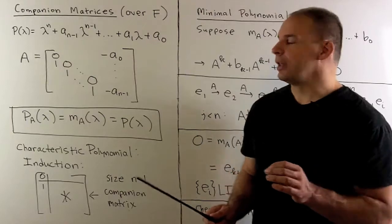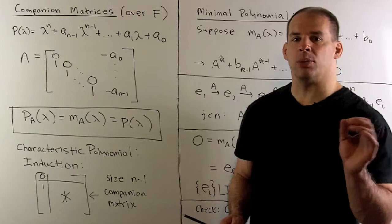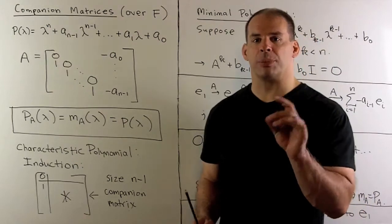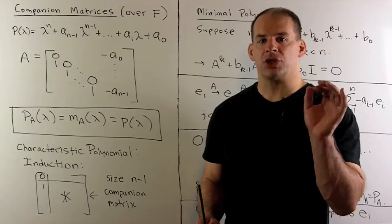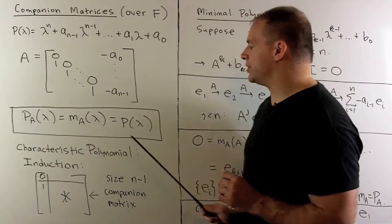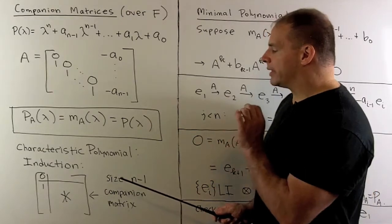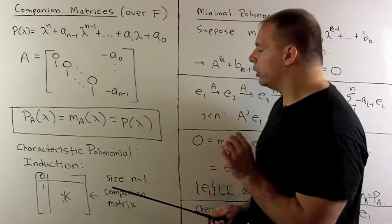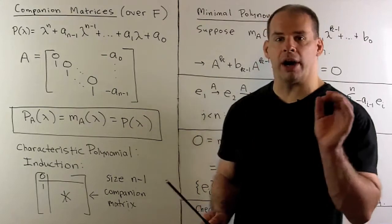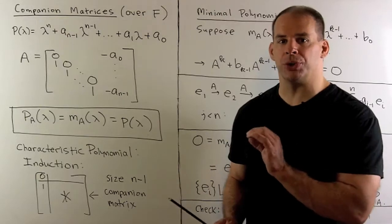It turns out the characteristic polynomial for A equals the minimal polynomial for A, which equals our original polynomial p(λ). To show the characteristic polynomial equals p(λ), we just use induction. What makes this work is that the (n−1)×(n−1) block in the lower right-hand corner is itself a size n−1 companion matrix, so this is well suited to induction.